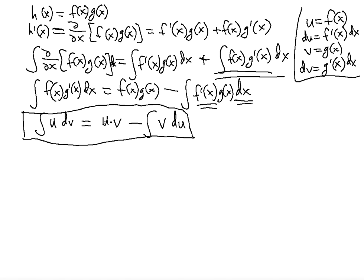Now let's bring an example. Suppose we want to find the integral of ln(x)dx. Obviously we choose one function to integrate and the other to differentiate. Notice that we cannot integrate ln(x) as it is, so we have to use integration by parts — we must differentiate ln(x) instead.